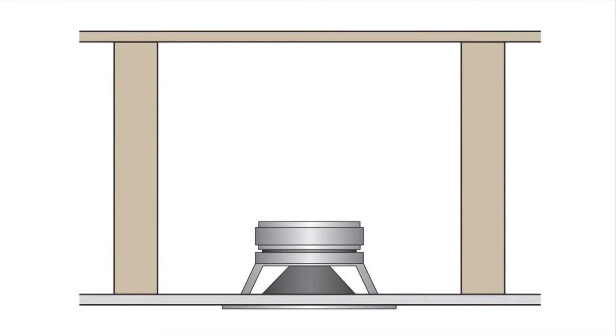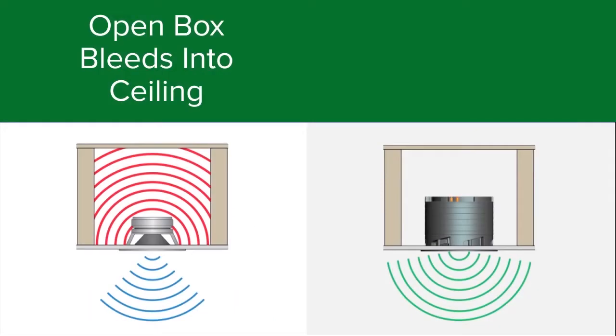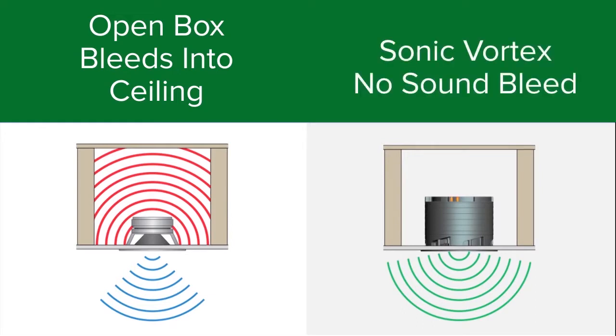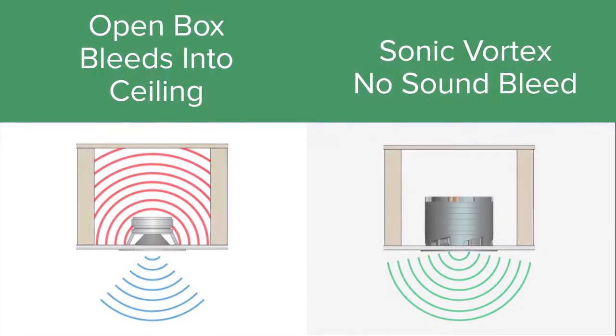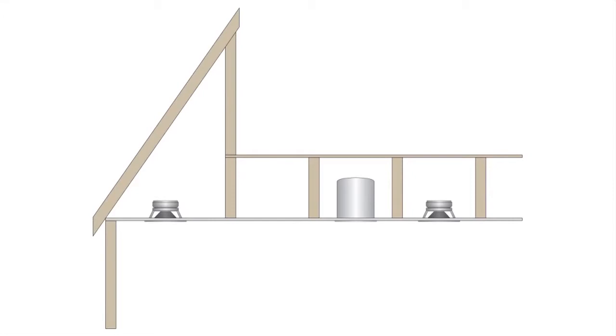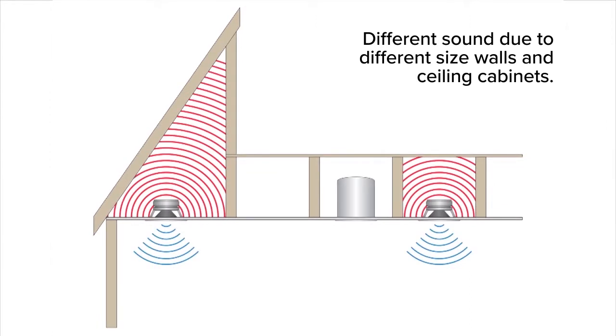The problem with most architectural speakers is the open-back design. Our integrated enclosure helps prevent sound from bleeding into the room above or adjacent rooms. Another negative effect of open-back design is that you often get a different sound out of each speaker due to different size wall and ceiling cavities.